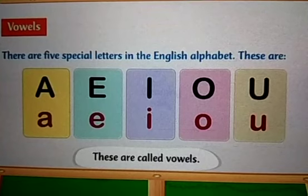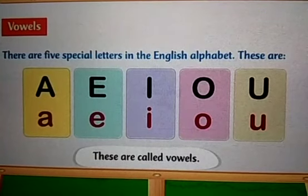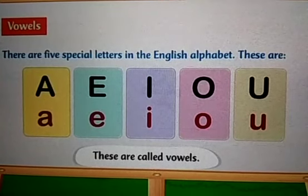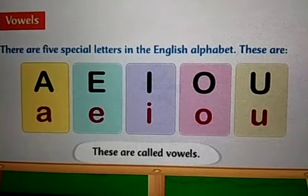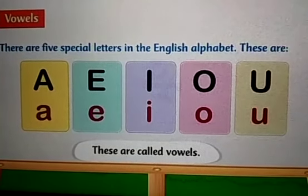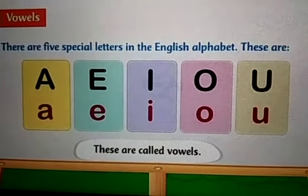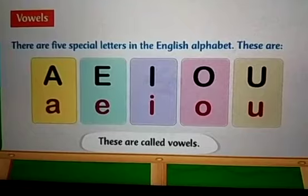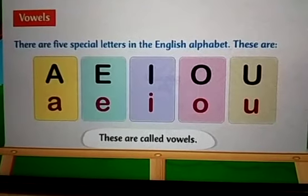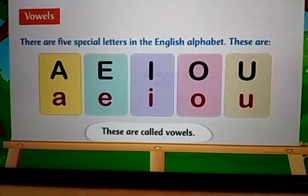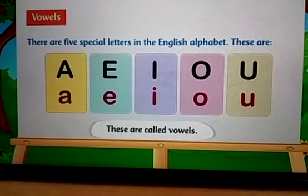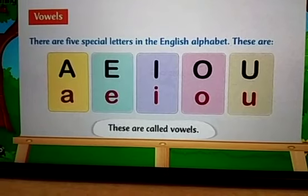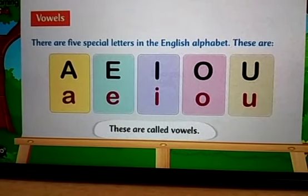According to the sound they produce, they are divided into these five: A, E, I, O, U. So now we will see vowels.